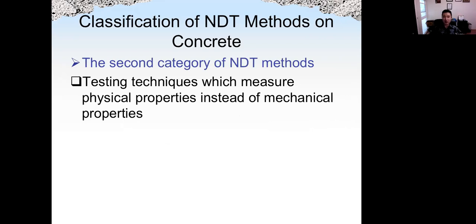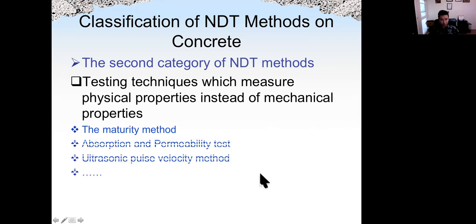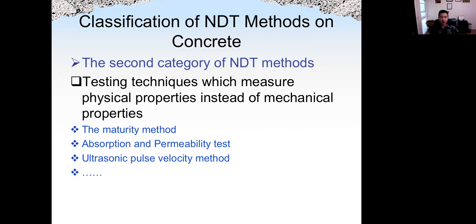That's the first category. The second category of NDT methods is testing physical properties instead of mechanical properties such as strength. We'll discuss the so-called maturity method, and also absorption and permeability tests. After that, the pulse velocity method — this is the method to detect internal flaws and also assess the strength of the concrete.